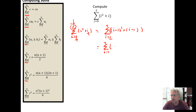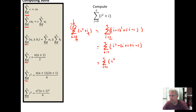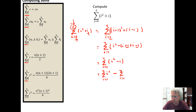Expanding (I minus one) squared plus (I minus one): we get I squared, then minus one times I twice so minus two I, then minus one times minus one is plus one, plus I minus one. Combining like terms: the sum from I equal one to four of I squared, then minus two I plus I is minus I, and plus one minus one is zero. So this simplifies to the sum from I equal one to four of I squared minus the sum from I equal one to four of I.